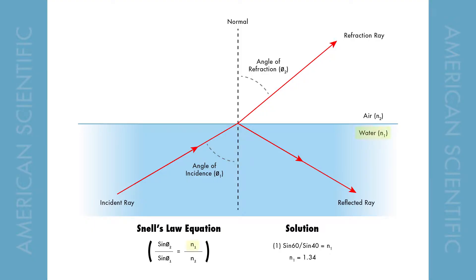Here N1 represents the refractive index of the first medium — water — while sine theta 1 represents the incident angle, which we measured to be 40 degrees. N2 is the index of the second medium, air, with sine theta 2 representing the angle of refraction, which is 60 degrees. With this information you'll be able to solve the Snell's law equation.